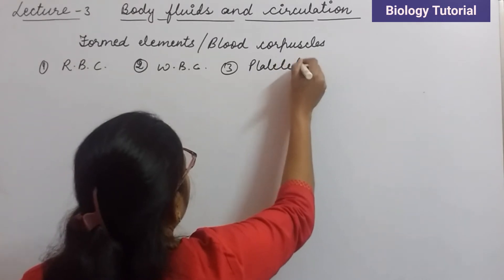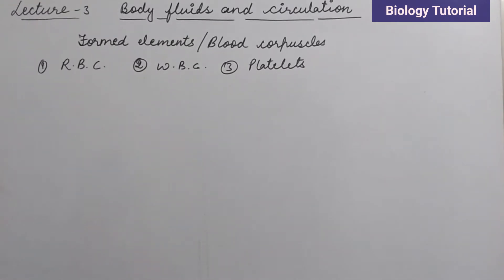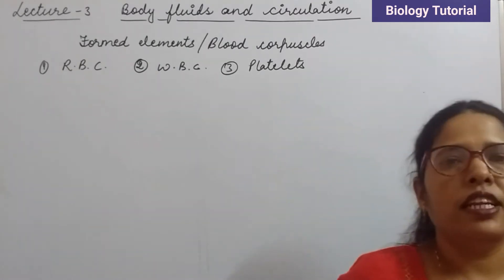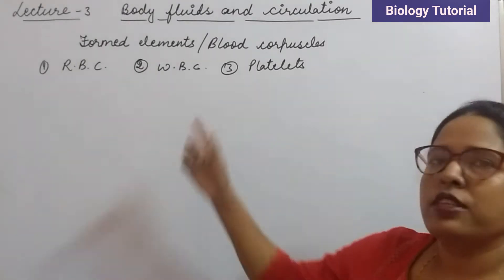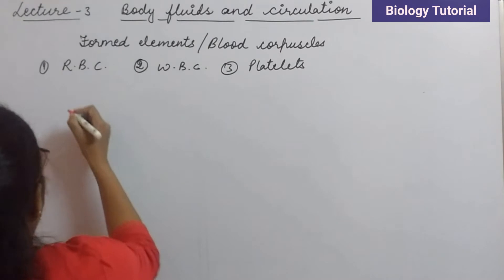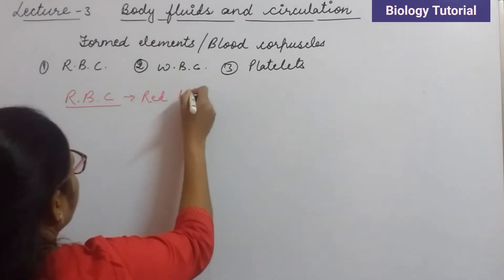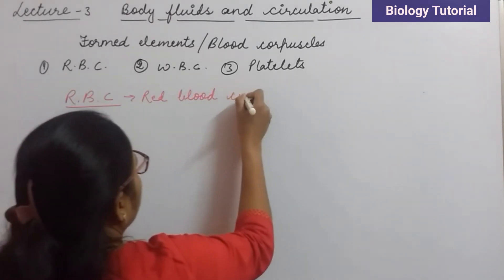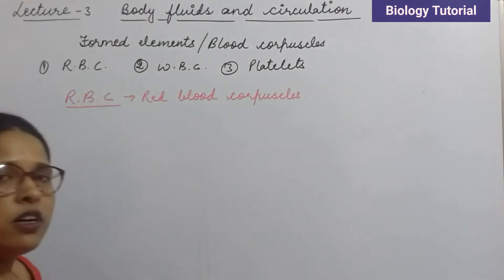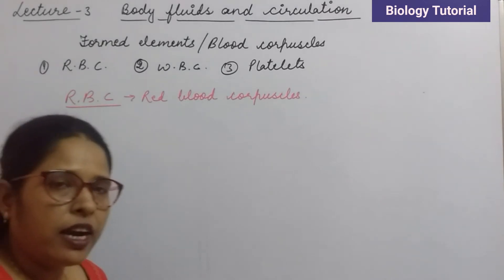RBCs are red blood corpuscles, WBCs are white blood corpuscles, and the third one is platelets. We will discuss about these three corpuscles in detail. First of all we are going to discuss about the RBCs present in the blood. Why are these red? Because of the presence of a red colored pigment which is hemoglobin — that's why they are red in color.